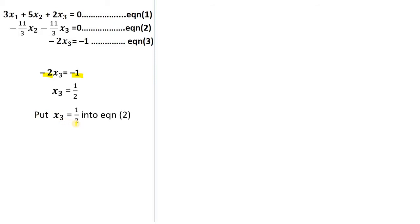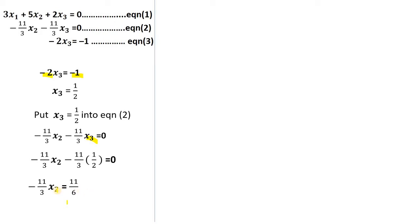Then we substitute S3 equals one half into equation 2 to find S2. This is equation 2 — wherever we see S3, we put 1 over 2. We simplify and then divide both sides by negative 11 over 3, and we get S2 equals negative 1 over 2.